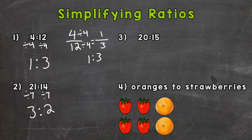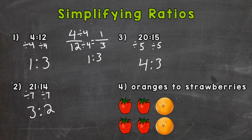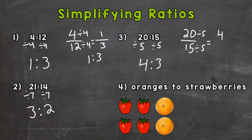Number 3: the greatest common factor between 20 and 15 would be 5. So let's divide both of them by 5, and we end up with 4 to 3. Again, if you want to set it up in fractional form and simplify, that is perfectly fine and we get the same answer — it's just in fractional form. We can always convert it back to whatever form you need to put it in.